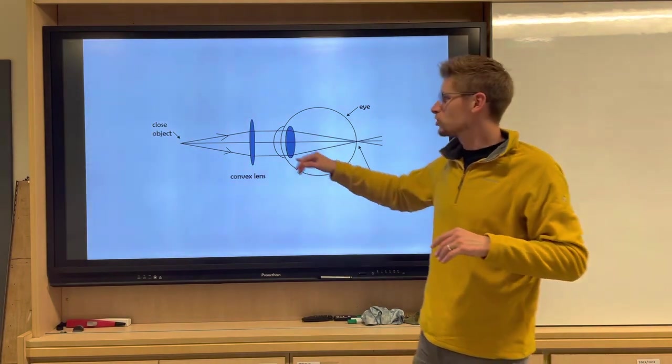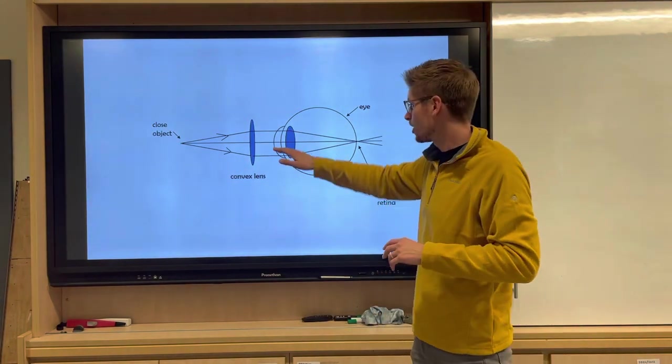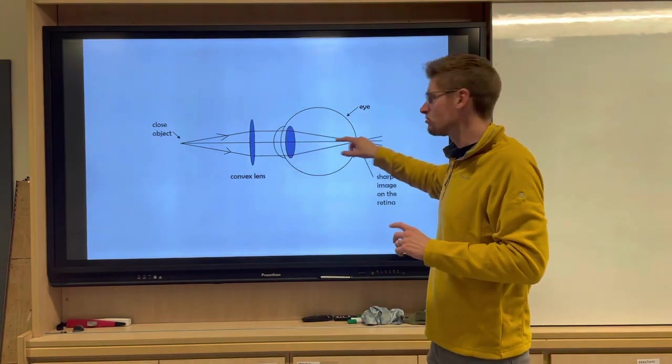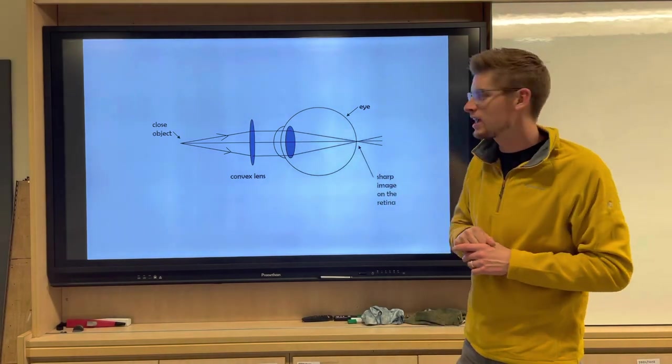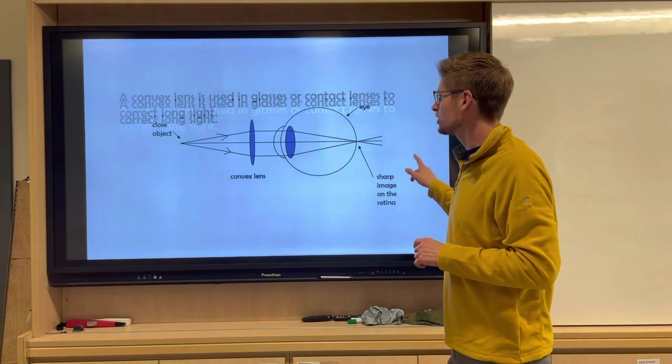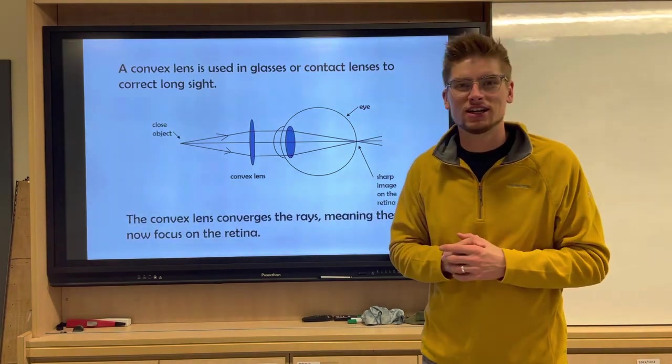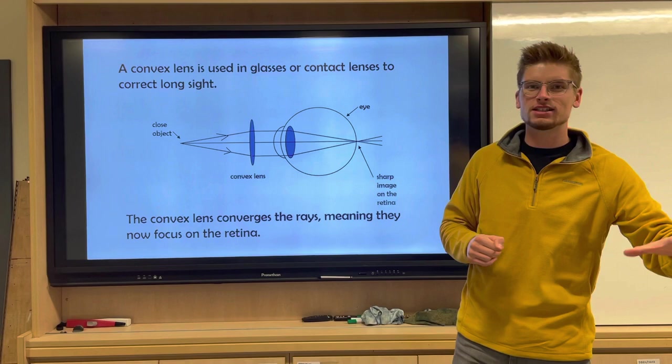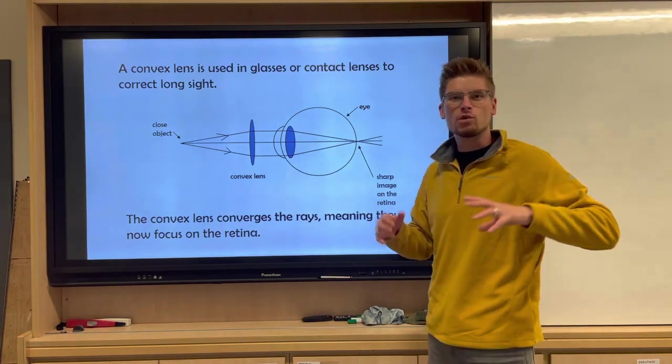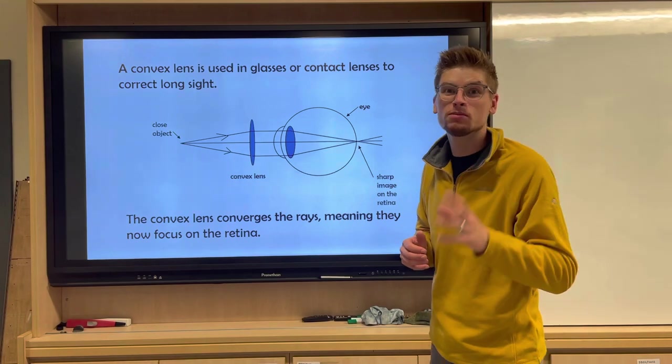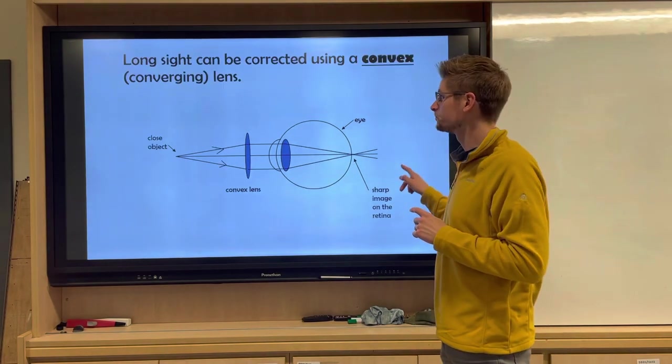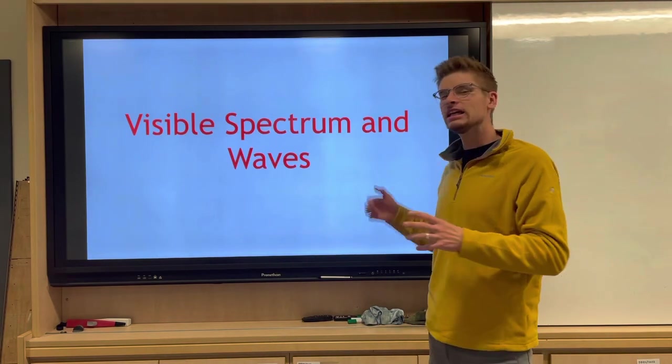We use a convex lens. It comes in, it refracts the light here, and it meets at the retina at the back of the eye. So that's how we would correct someone with long-sightedness. If you've got glasses or someone has glasses, this is a prime example of refraction of light and a good application of how we can help people with bad eyesight.